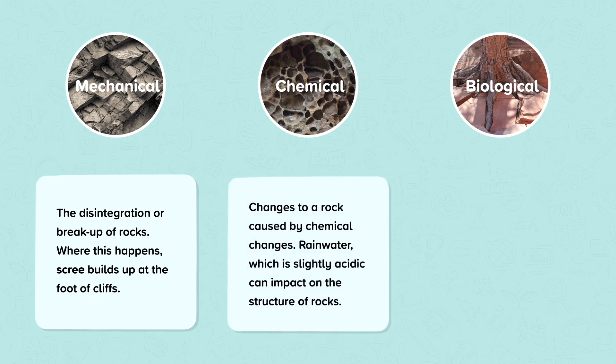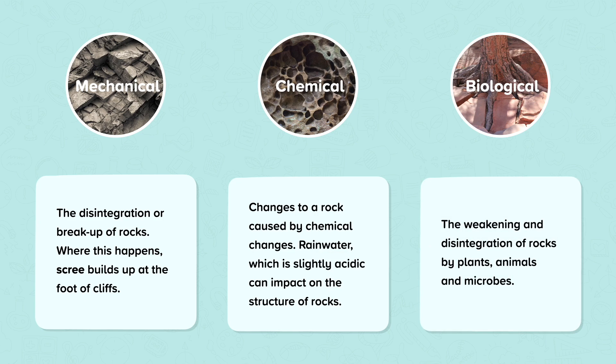Chemical weathering is changes to a rock caused by chemical changes. Rainwater, which is slightly acidic, can impact on the structure of rocks. And finally, biological weathering is the weakening and disintegration of rocks by plants, animals and microbes.